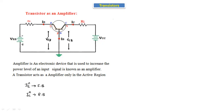We are taking an NPN transistor here. In the NPN transistor, the emitter current direction is outward and the base and collector currents are inward. The negative terminal of the supply is connected to the N-type emitter terminal, so the emitter junction will be in forward bias.